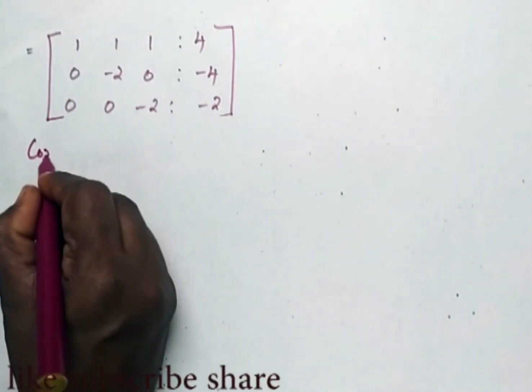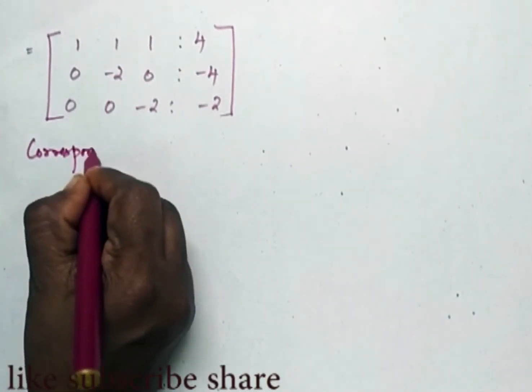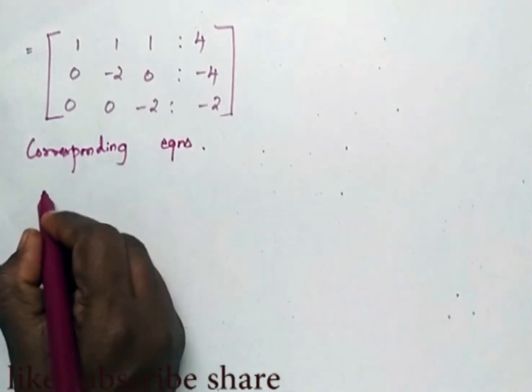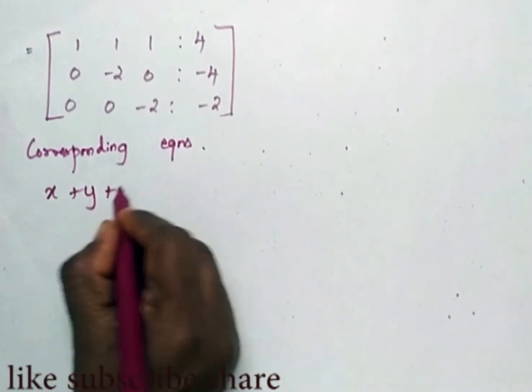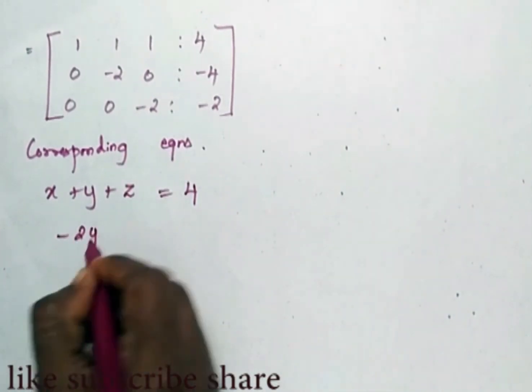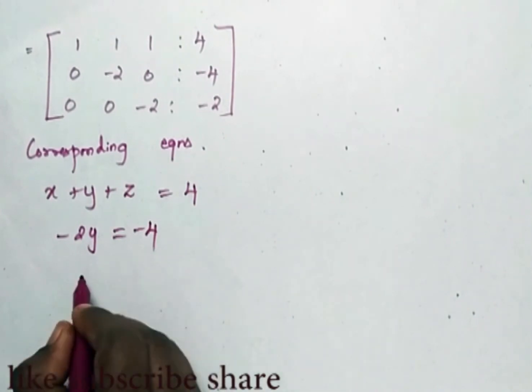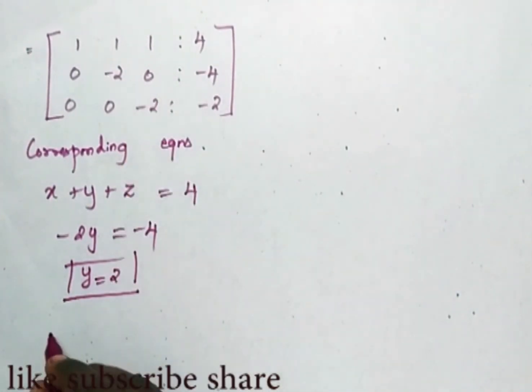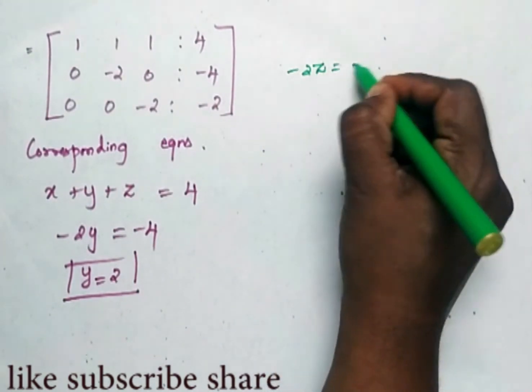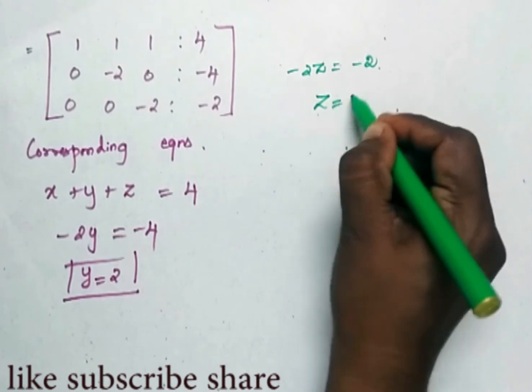Now the corresponding equations which we obtain is: X plus Y plus Z is equal to 4, minus 2Y is equal to minus 4, so now we obtain the Y value as 2. And the next one is minus 2Z is equal to minus 2, so Z is equal to 1.